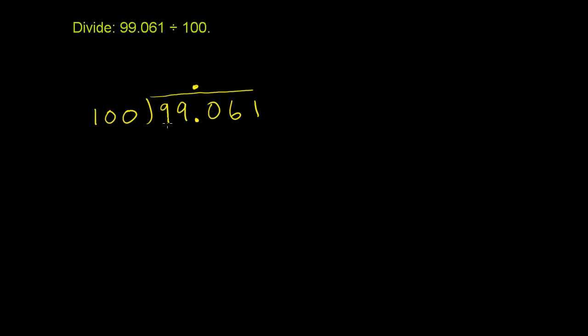So 100 doesn't go into 9, it doesn't go into 99. Does 100 go into 990? Sure. It'll go 9 times. It goes into 990 9 times. So that's why we put the 9 above the 0, because we had to get all the way to the 0 for the 100 to be divisible into the number.